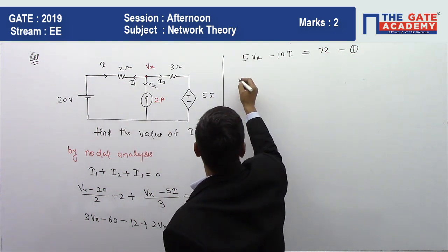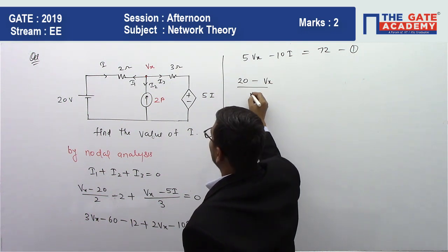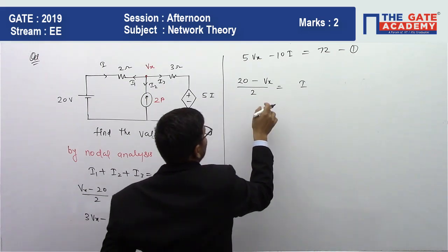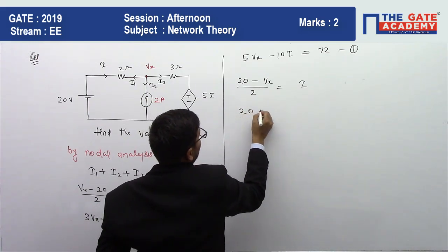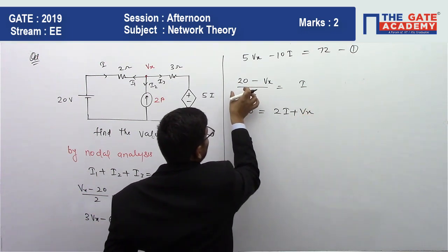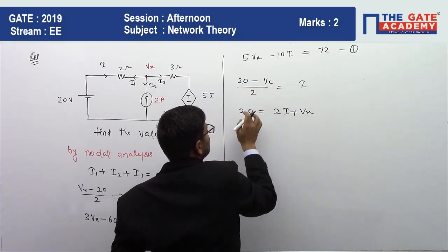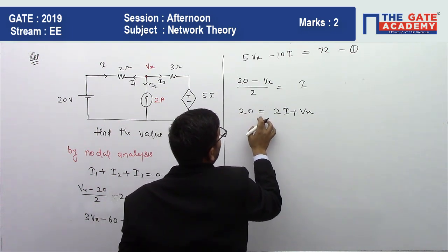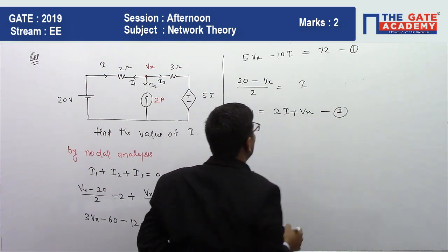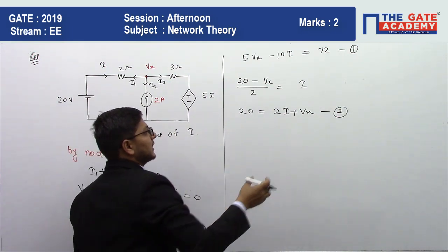20 minus 2I plus Vx equals 20, equal to 2I minus Vx. This is my equation number 2. Now I'm going to solve these two equations and find the value of I. Just calculate the value of Vx and put it in this equation.